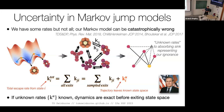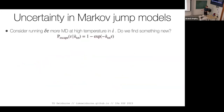We map our system to an absorbing Markov jump model, where one state represents our ignorance — things we haven't seen. Our goal is to estimate the rate of this unknown state corresponding to everything we haven't seen. This actually works because we know that escape rates follow a first-order exponential law. This allows us to derive a Bayesian likelihood for the expectation of seeing something new in our next batch of MD.